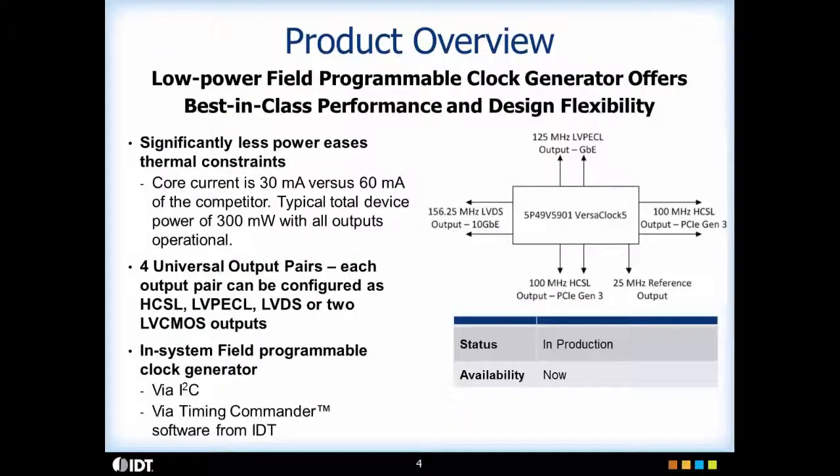The third option is factory programming in which IDT will program the device to your configuration so no programming is required by the customer. To summarize, VersaClock 5 family of products have extremely low core current consumption with 30 milliamps versus 60 milliamps from the competitor. There are four universal outputs which can be configured as HCSL, LVPECL, LVDS or two LVCMOS outputs. The device is in-system field programmable using I2C or Timing Commander software from IDT.